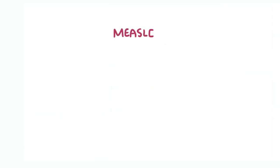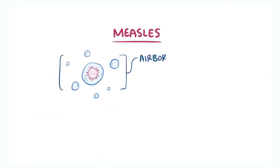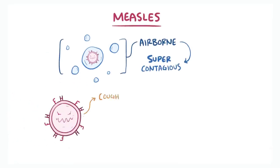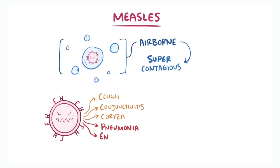Quick review of measles: measles is an airborne pathogen that's highly contagious, and causes cough, conjunctivitis, and coryza, as well as complications like pneumonia and encephalitis, and can be prevented through vaccination.